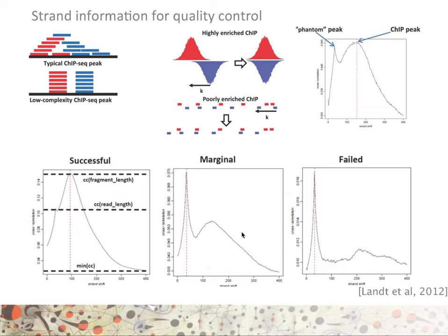In the middle panel, we have a more marginal experiment where there is a ChIP peak, but the phantom peak is much higher. Finally, in the last panel, we clearly have a failed experiment where we hardly see any peak, but we also have a clearly high phantom peak.